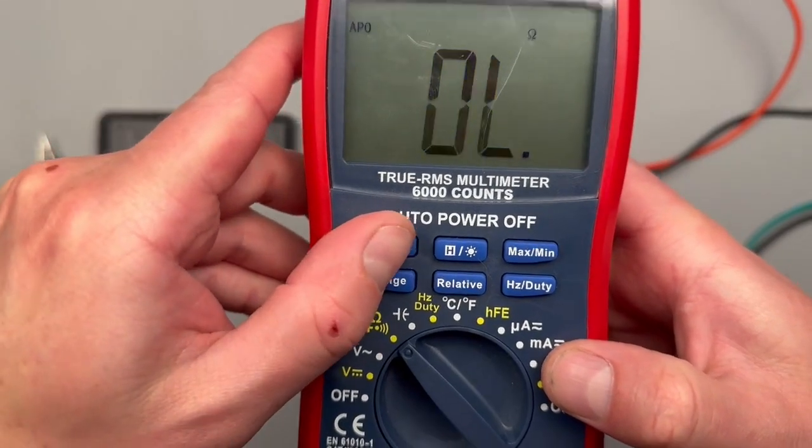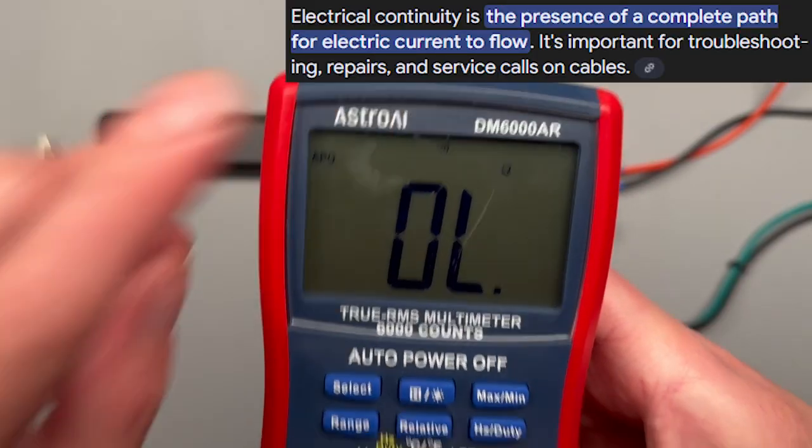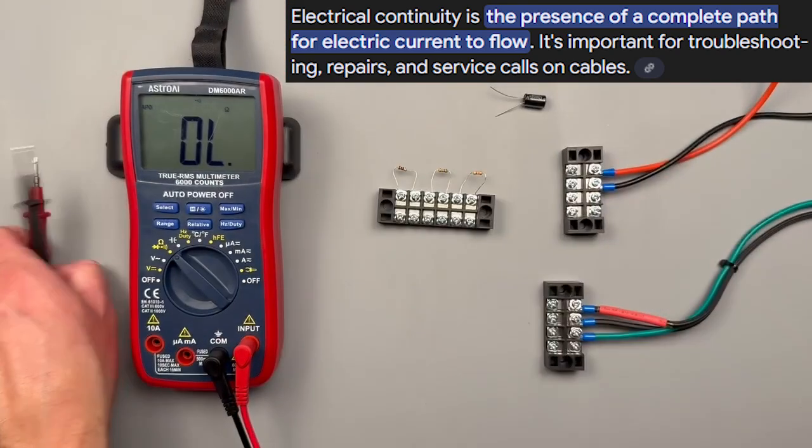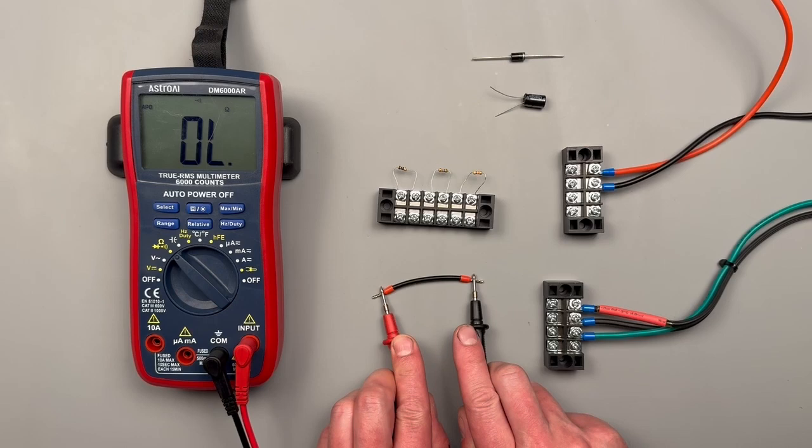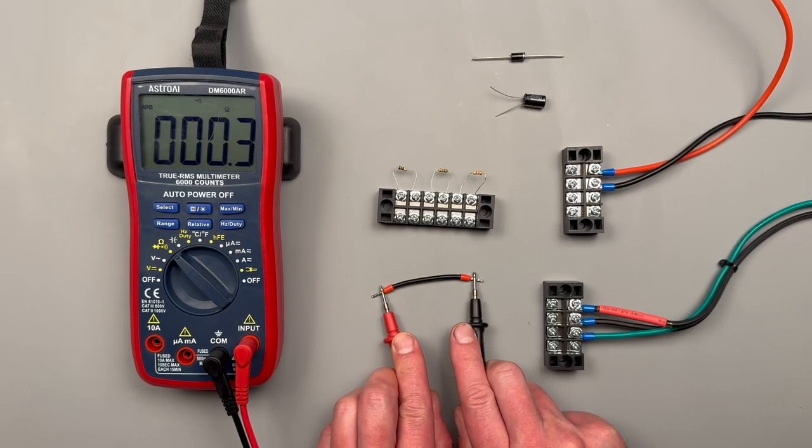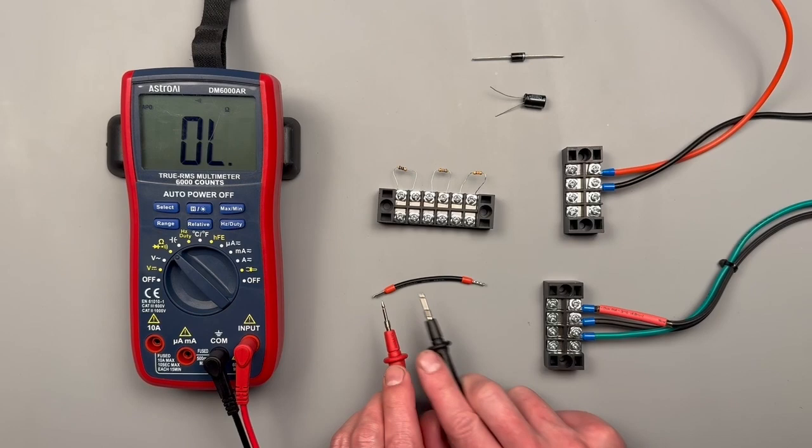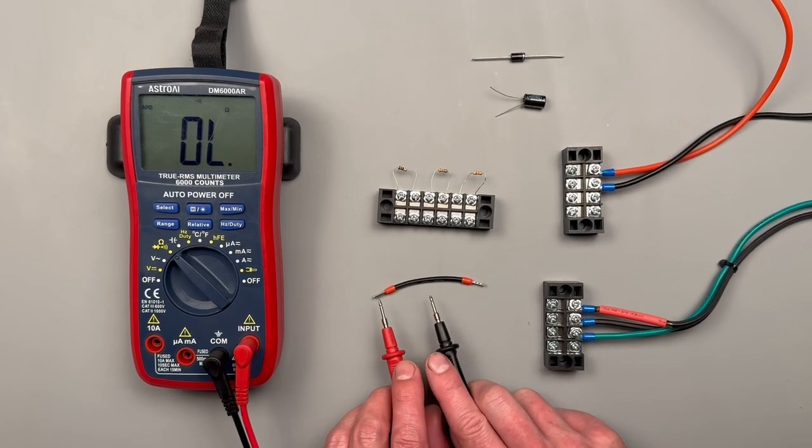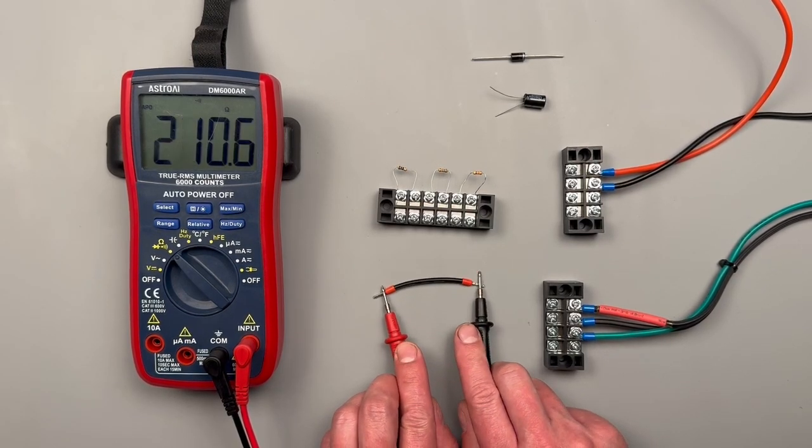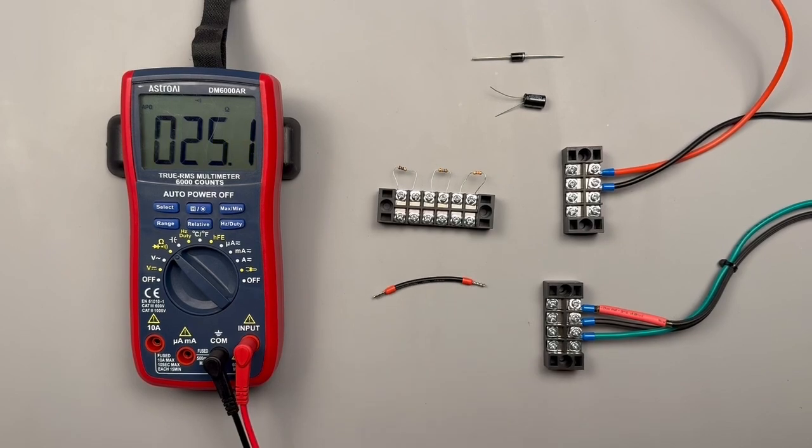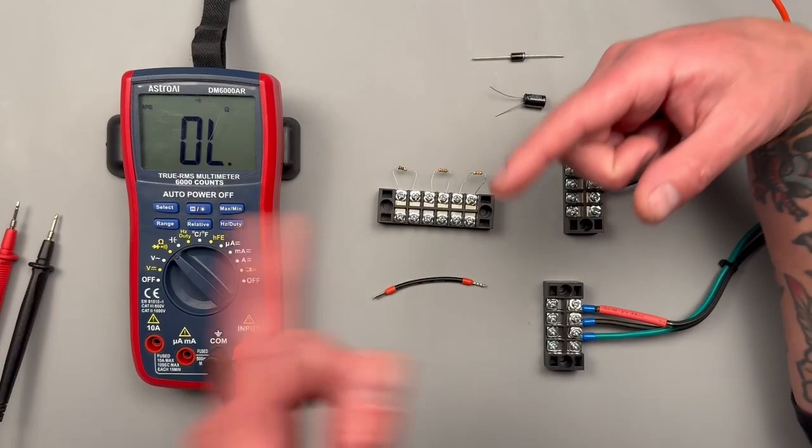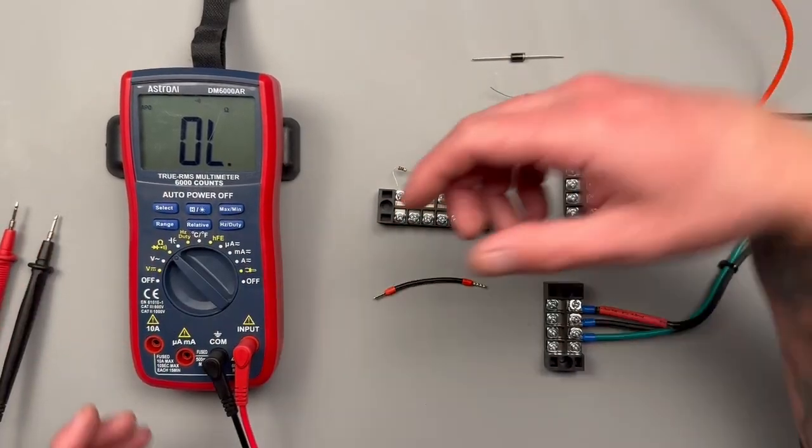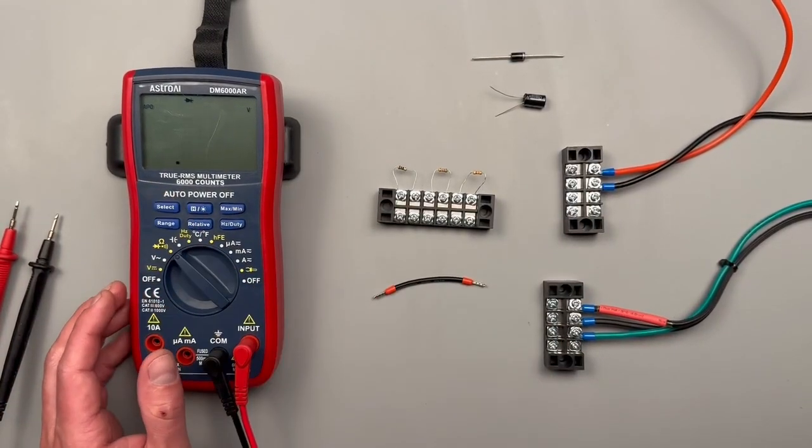We can use the selector switch to move through these different settings. This one will default to ohms. If we select again, this little speaker up here is going to indicate continuity. What can that be handy for? That means if you have a wire that you're trying to test from one end to the other, it's going to produce a tone if the continuity is good enough. Really handy for trying to decipher if you have a lot of different wires which wire goes to where on which side.